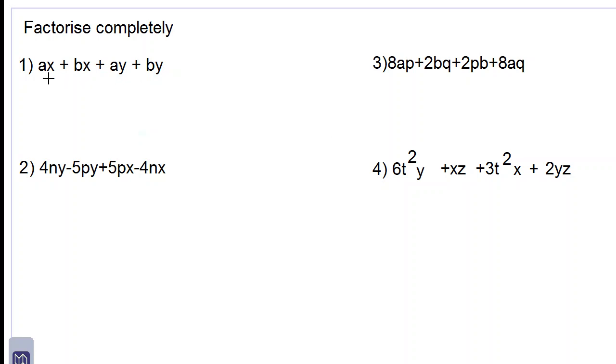Number 1, we look at the first two terms, ax and bx. Both of them have a common factor, x, so we take that out. And we factorize out the x, giving us a plus b on the inside of the brackets.